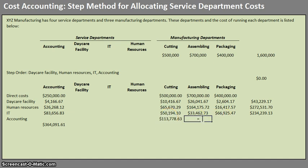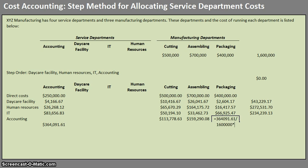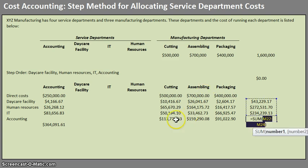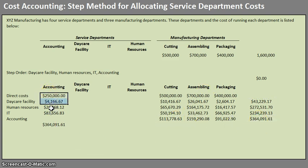Cutting gets $364,091.61 ÷ $1,600,000 × $500,000. Assembling uses $700,000 of those costs. Packaging gets $364,091.61 ÷ $1,600,000 × $400,000. Checking our work confirms the allocations sum to $364,091.61. All service department costs have now been fully allocated.